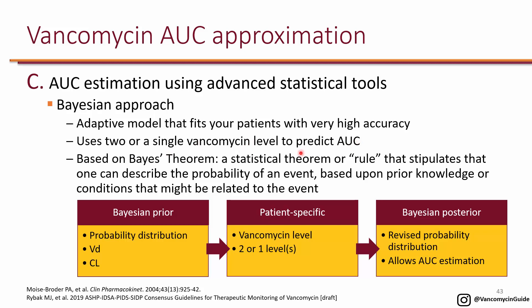The Bayesian approach uses Bayes' theorem. It quantifies the sequential relationship between the estimated probability distribution of an individual patient's pharmacokinetic parameters — such as volume of distribution and clearance — referred to as the Bayesian prior. The Bayesian prior uses population pharmacokinetics to estimate the patient's volume of distribution and clearance empirically. Once you get the vancomycin level — either one or two levels — you put them into the Bayesian model. This produces the Bayes' posterior, which revises the population-kinetics probability distribution to adapt the model to the patient, allowing very accurate AUC estimation.